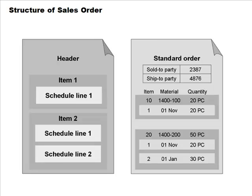Schedule lines exist only on sales orders. On subsequent documents like outbound delivery, billing document, and invoice, there are no schedule lines — the schedule line in the sales order becomes an item in a delivery document. The quantities on schedule lines must add up to the total quantity on the item.